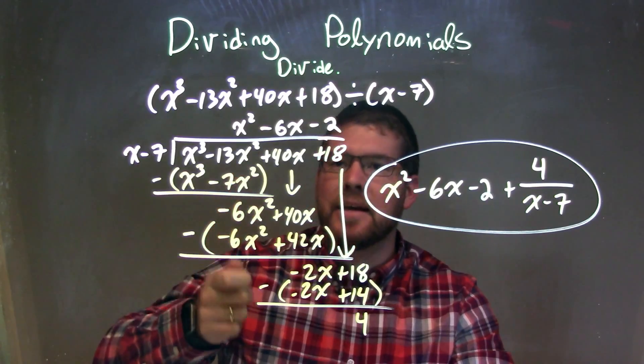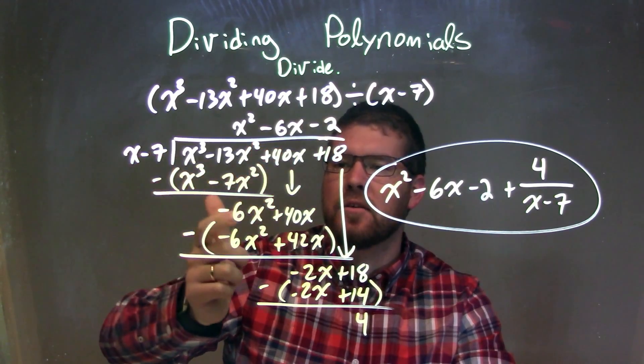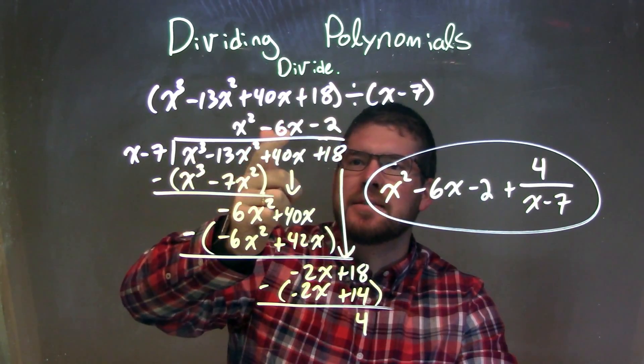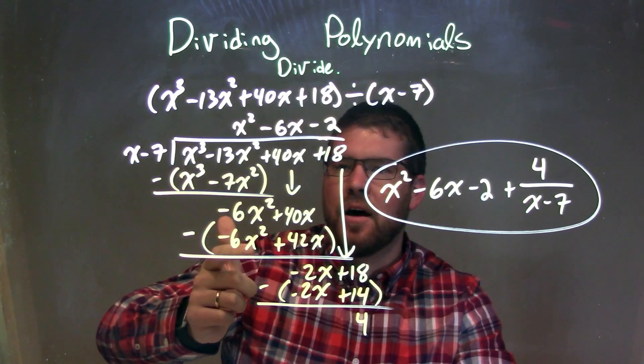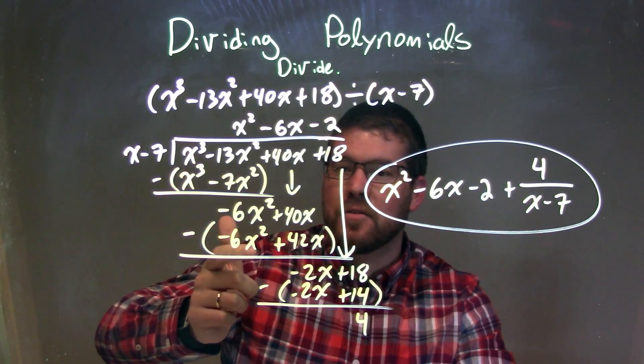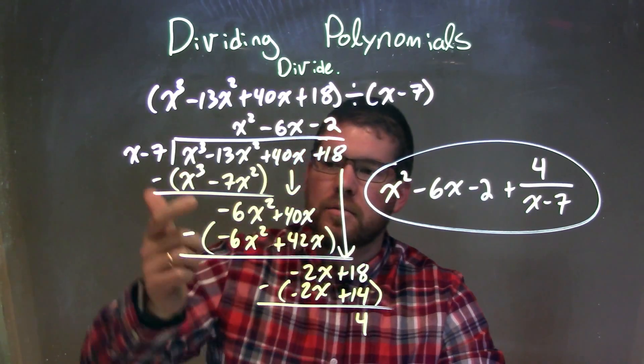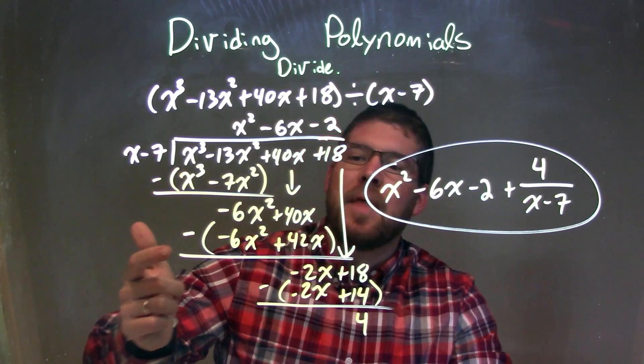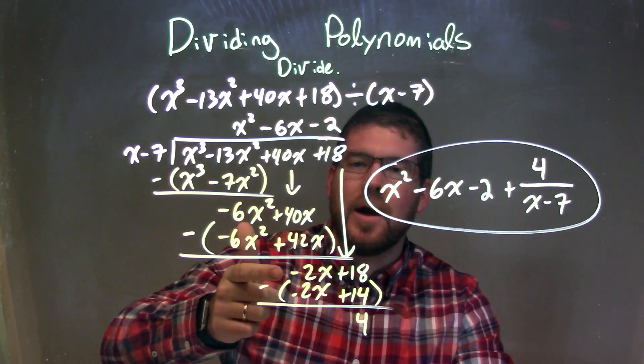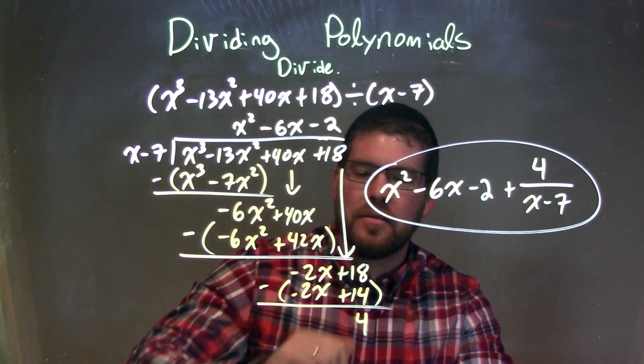Same thing again, same idea, same question. What times x gives me a negative 6x squared? Minus 6x times x is negative 6x squared. Multiply negative 6 times negative 7 is a positive 42x. Subtract the two, and then we ended up with a minus 2x here and brought down the positive 18.